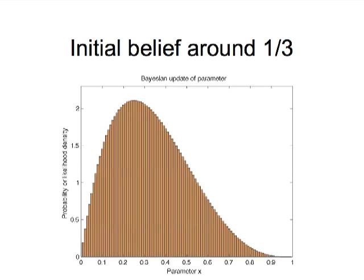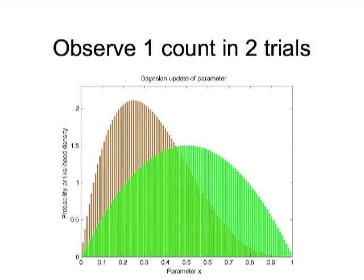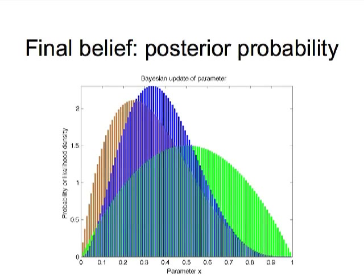Let's go through an example where we start off with a prior belief and update it with data to see what the posterior belief would be expressed as a probability distribution. Suppose our initial belief is a weak prior that the coin head probability is around one-third. Now we flip the coin twice — we observe one count in two trials — and we see the effect of the likelihood in green. To combine this, we multiply these two curves together and renormalize. The posterior probability shows that two experiments moved our beliefs somewhat away from being centered at one-third, but not that much. In order to get a stronger belief, we need more data.